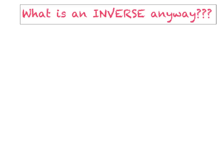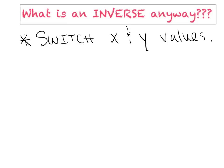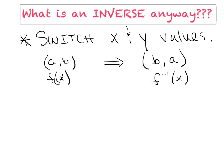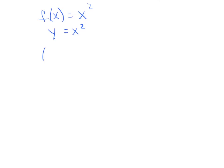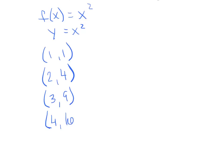One more discussion before we start building these graphs: what is an inverse anyway? We spent a lot of time on inverses back in the fall, and basically to summarize, all you have to do is switch the x and y values. If a comma b lies on the original graph f(x), then we automatically know that the ordered pair b comma a lies on the graph of f inverse of x. For example, if f(x) = x², the points (1,1), (2,4), (3,9), and (4,16) sit on that graph.